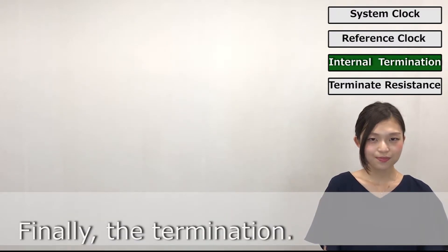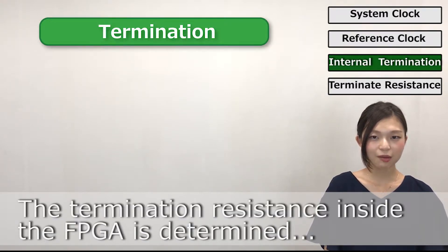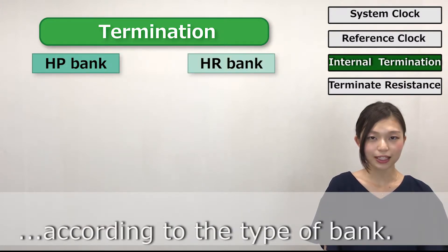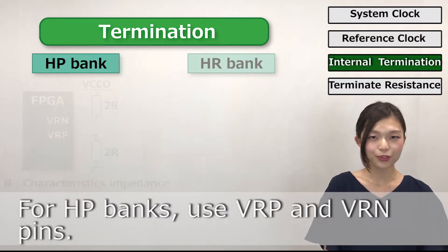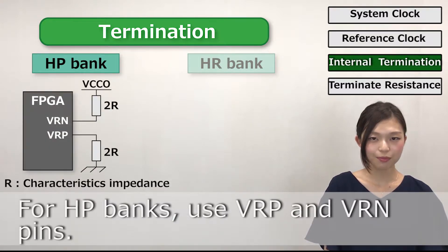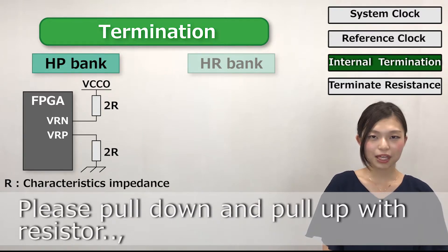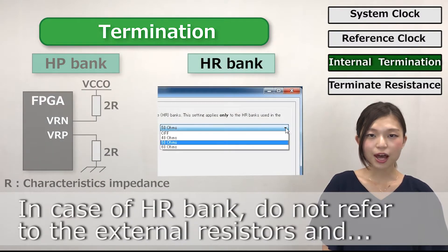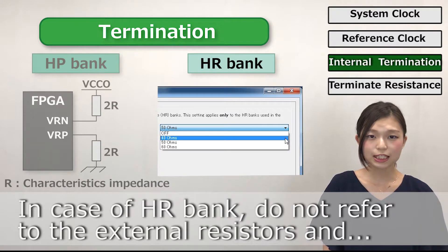Finally, the termination. The termination resistance inside the FPGA is determined according to the type of bank. For HP bank, use VRP and VRN pins — please pull down and pull up with resistors. The value of the resistor is the characteristic impedance. In the case of HR bank, do not use the external resistor.